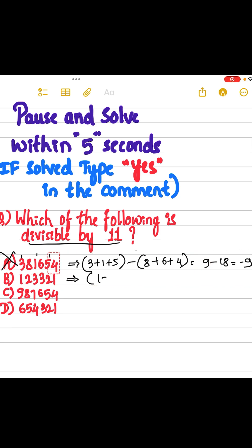Second one, 1 plus 3 plus 2 minus 2 plus 3 plus 1. 6 minus 6, answer is 0. So it is divisible by 11. If you have time, you can check these both too. The answer is option B.